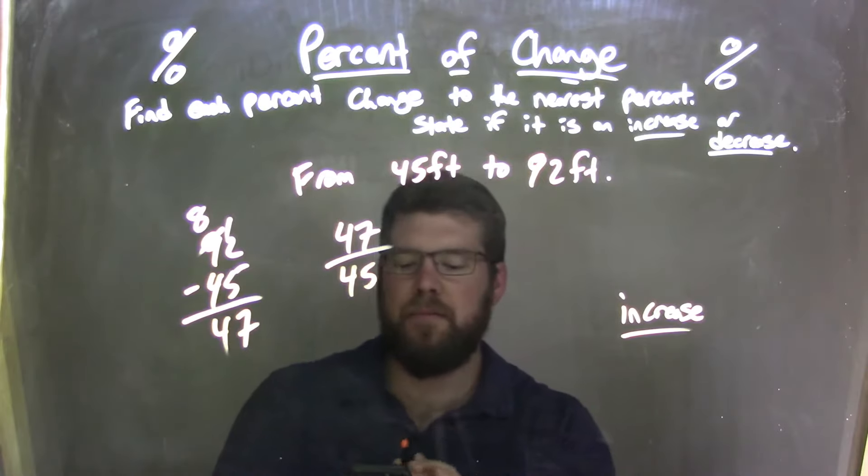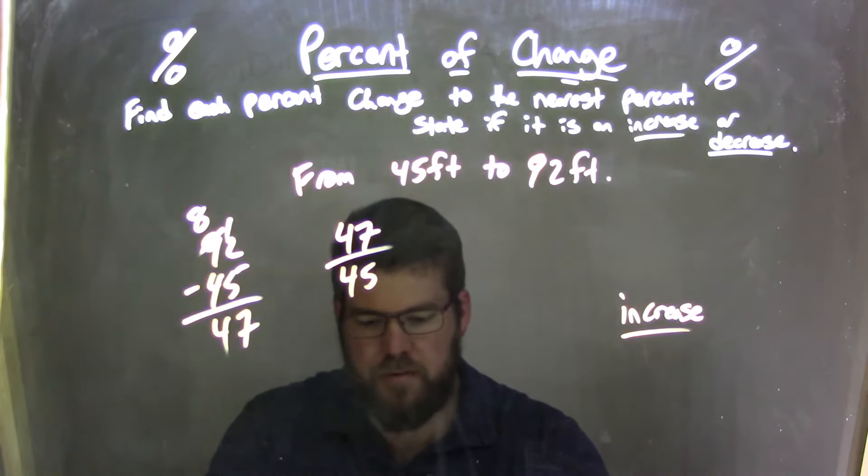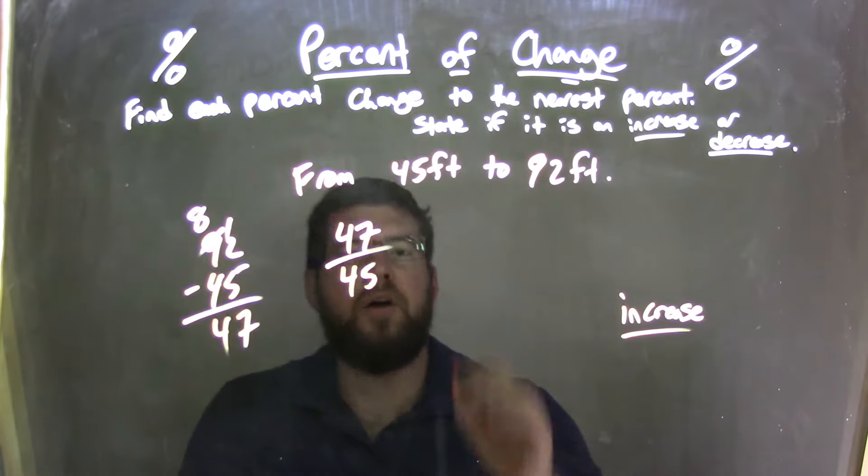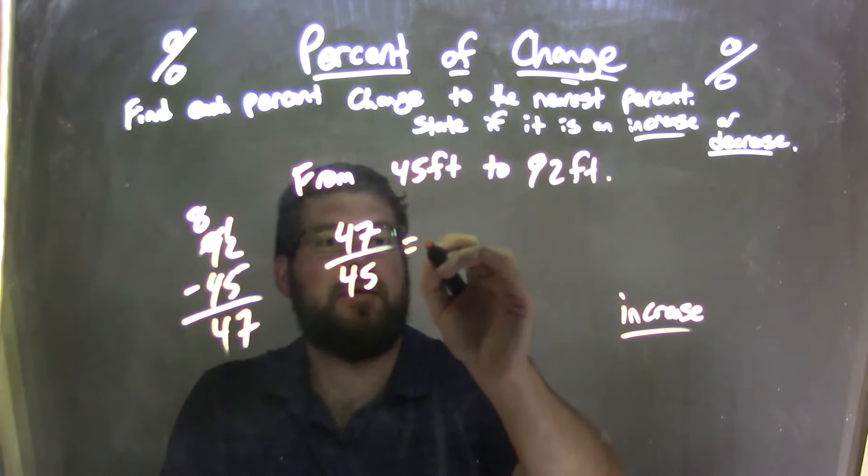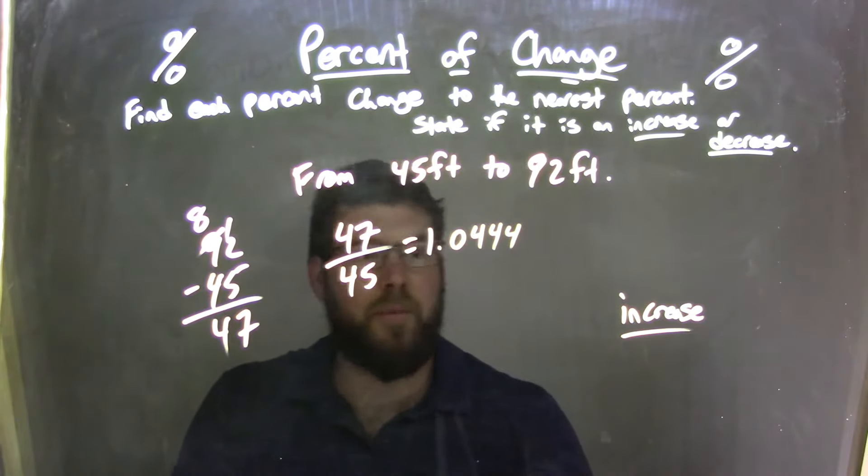So if I use my calculator here, 47 divided by 45, save some time. We have 104... I'm sorry, not 104. 1.0444 repeating forever.